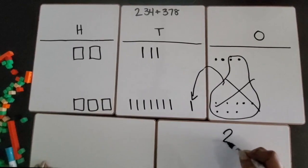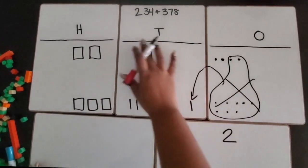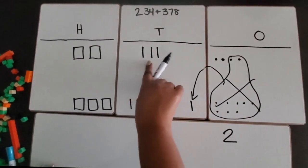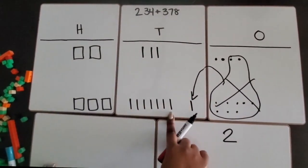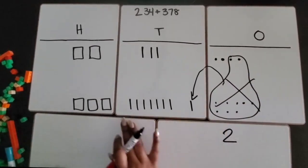Now I'm going to add all my tens together. I have three up here, seven down here, plus the extra one after I regroup my ones. So seven plus three is ten.